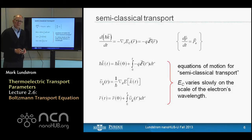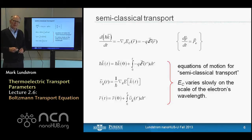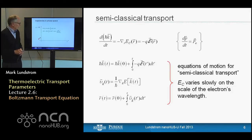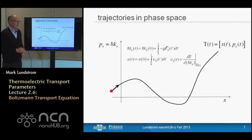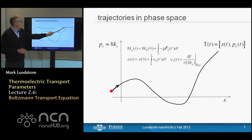Our goals are to find an equation for this distribution function out of equilibrium, learn how to solve it near equilibrium where the solution is relatively straightforward, and relate it to what we've done using the Landauer approach. We're only going to look at the diffusive limit for samples that are many mean free paths long, because that's typically the case where we use the Boltzmann equation.